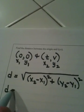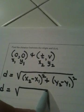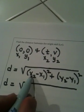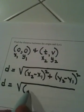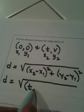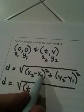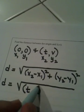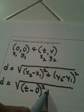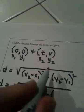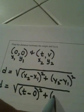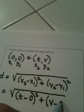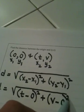And then now we simply plug in. x sub 2 is t. Minus comes from the formula. x sub 1 is 0. Close it and square it. Put a plus. y sub 2 is v. Minus comes from the formula. y sub 1 is 0. Close it and square it.